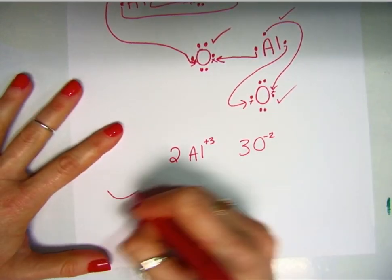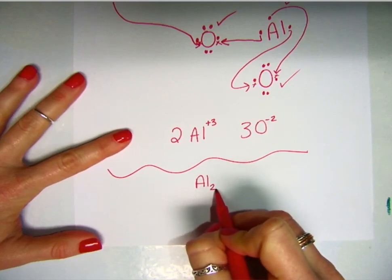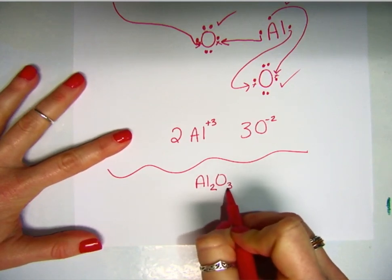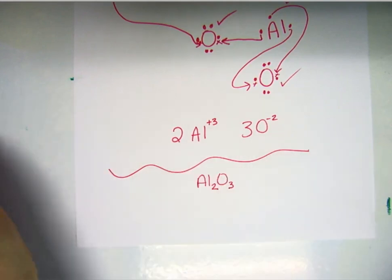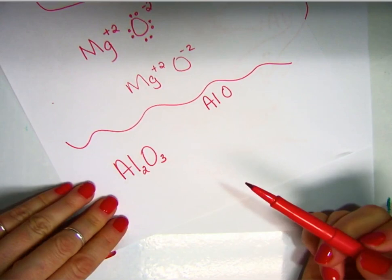When we write the formula for this, the actual formula would be aluminum two, oxygen three, which is exactly what I said from the beginning. We were going to end up with two aluminums and three oxygens.